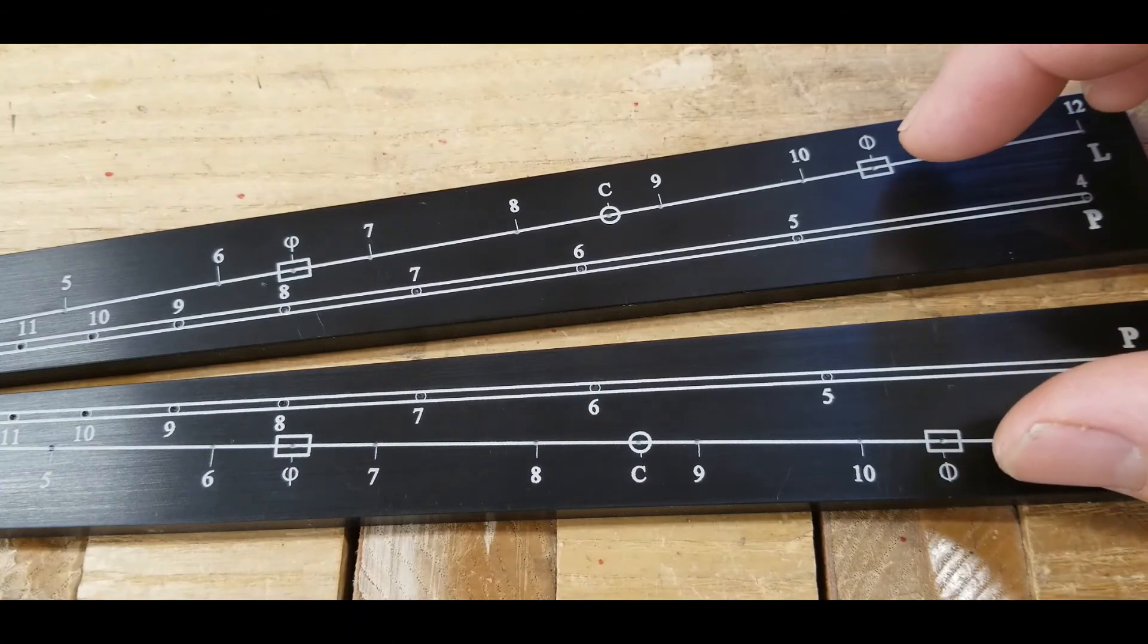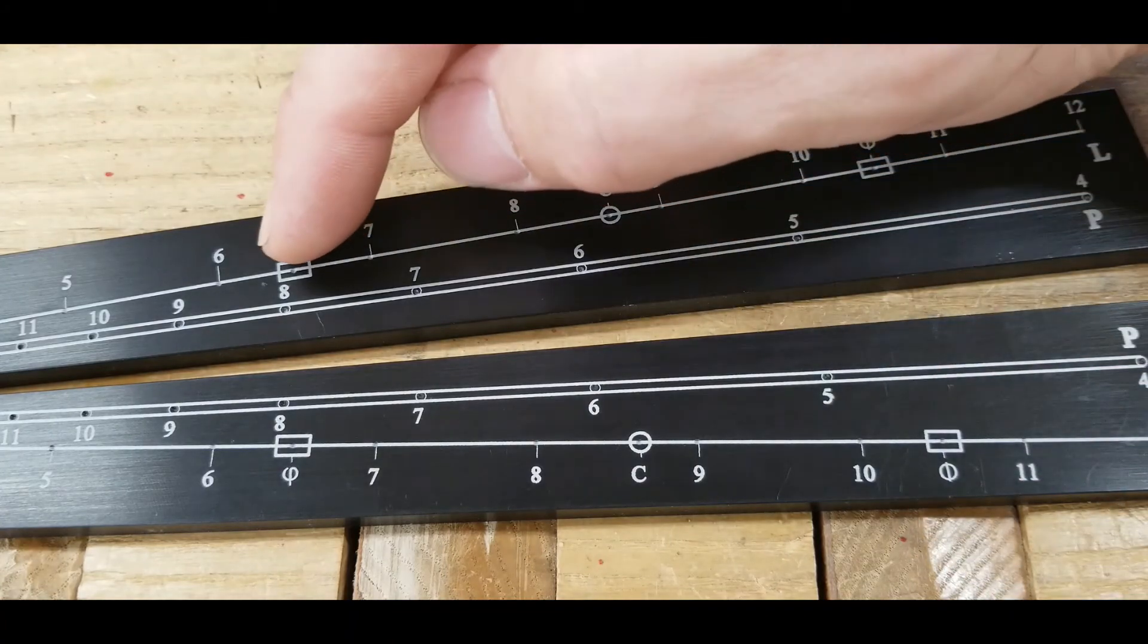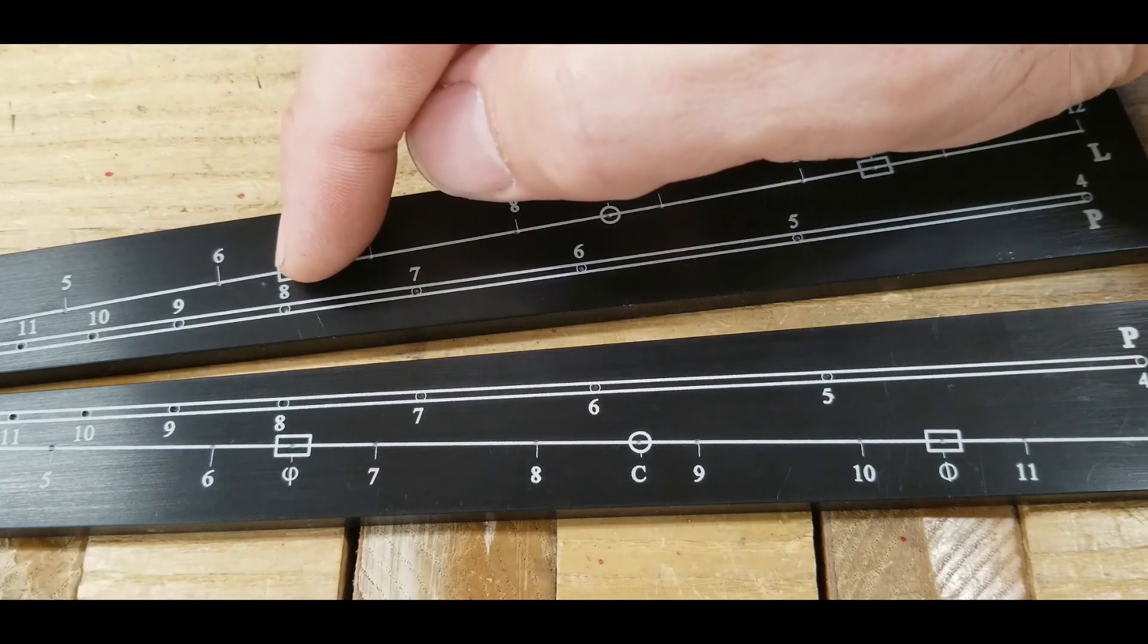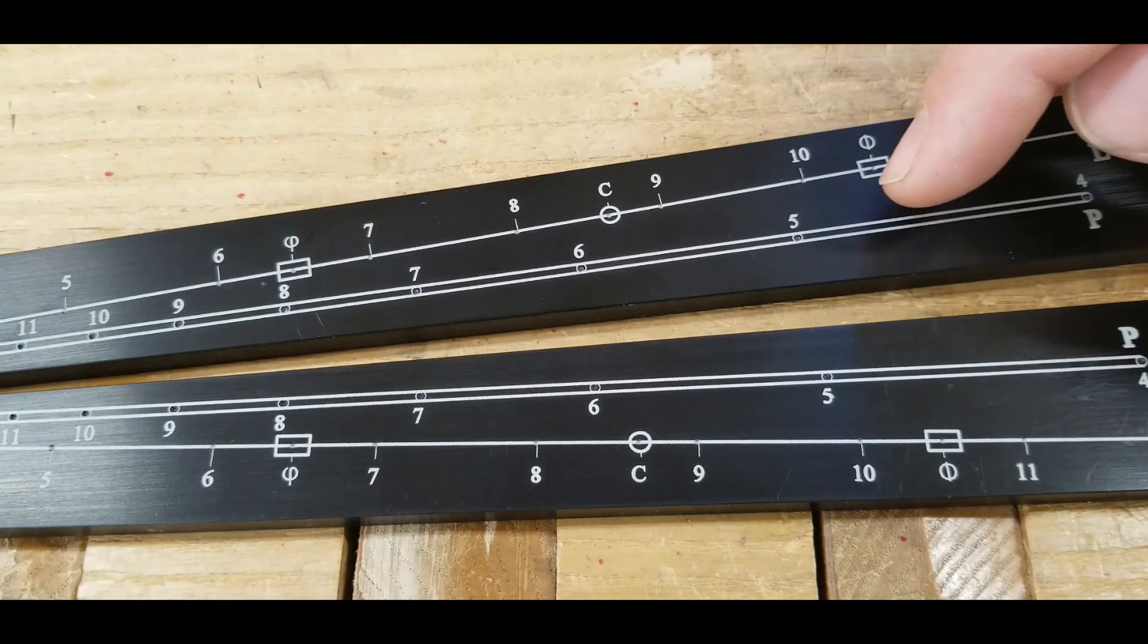If you know the long side, you can set your dividers here to find the short side down here, or vice versa. If you know the short side, you'd set your dividers here and reset them here to find the long side.